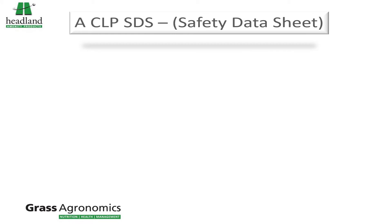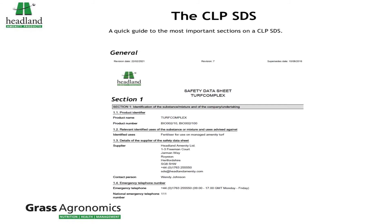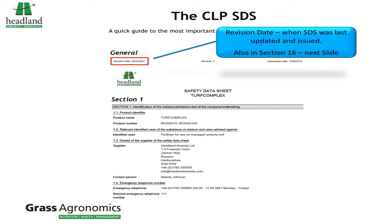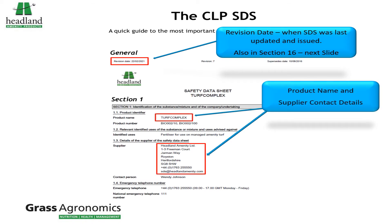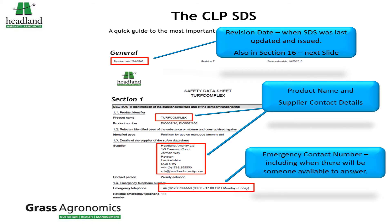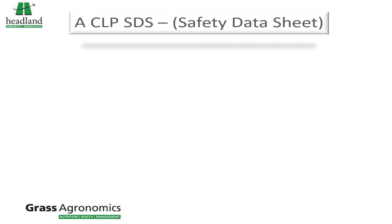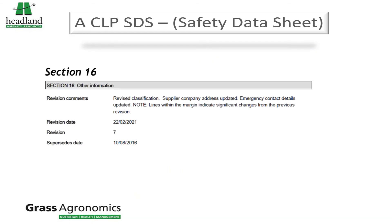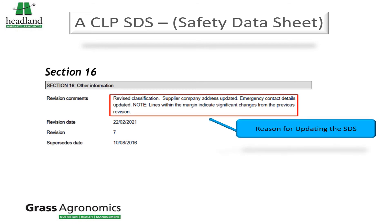SDS, or Safety Data Sheet, is a term that you have probably come across before and they can run into many pages. Here though we are just going to highlight a few major points. Revision date is when the Safety Data Sheet was issued, also covered in Section 16 on the next slide. Product name and supplier details are self-explanatory. Emergency contact details, where an expert will be able to help give you further advice.